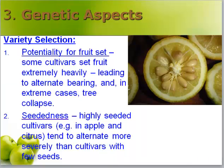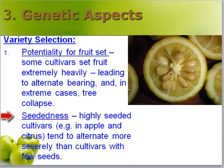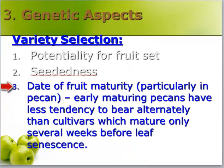Now I'd like to talk about some genetic aspects. Variety selection: the potential for fruit set is important — some cultivars set fruit extremely heavily, which leads to alternate bearing and, in extreme cases, tree collapse. Another aspect is seediness: high-seeded cultivars in apple and citrus tend to alternate bear more severely than cultivars with few seeds. Finally, date of fruit maturity — particularly true in pecans but also in olives: early maturing pecans and olives have less tendency to bear alternately than cultivars which mature later in the season.